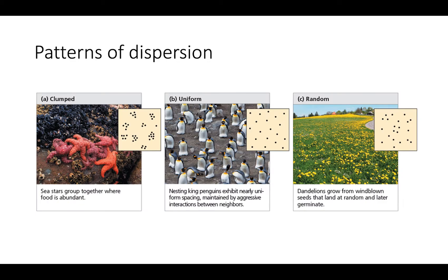There are three main patterns of dispersion. The first is clumped dispersion, which you typically see when resources are not evenly distributed in the environment.